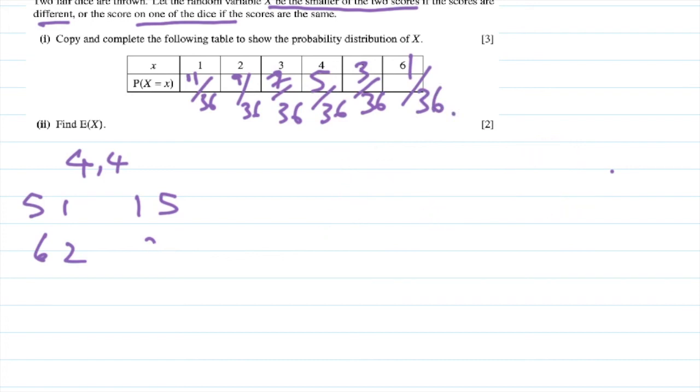Whenever I draw a distribution table, I make sure that I add all of them so that it gives me one. So eleven plus nine plus seven plus five plus three plus one equals thirty-six. There you go, that's correct. Now that we have all the values, let's find out what is the expected value.